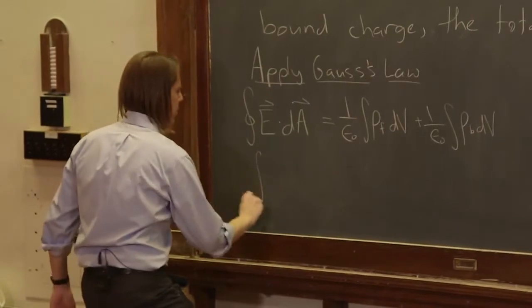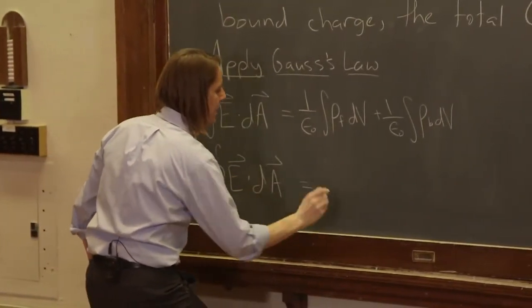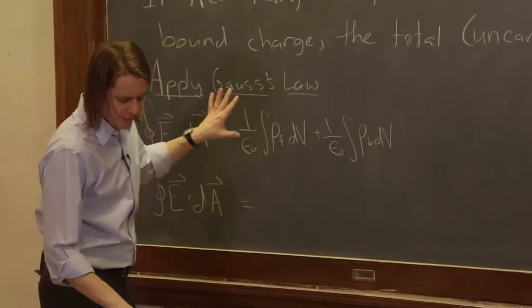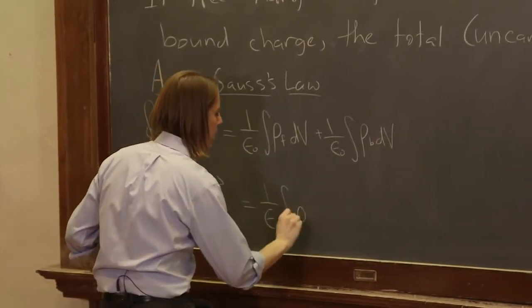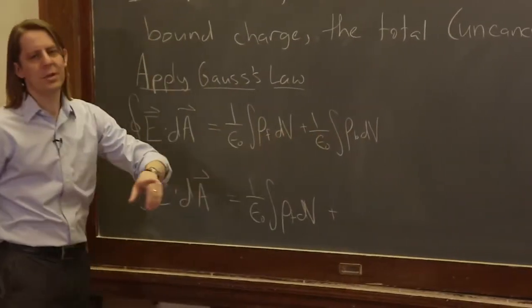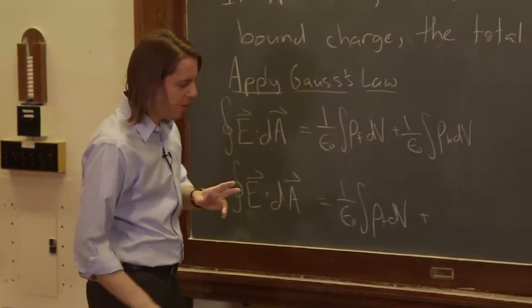Now let's write it again. The integral around this closed surface of E dot dA. And we're going to change one of them. Let's leave this one: one over epsilon naught integral of rho free dV. And then this one, remember what was rho bound? It was minus the divergence of big P.